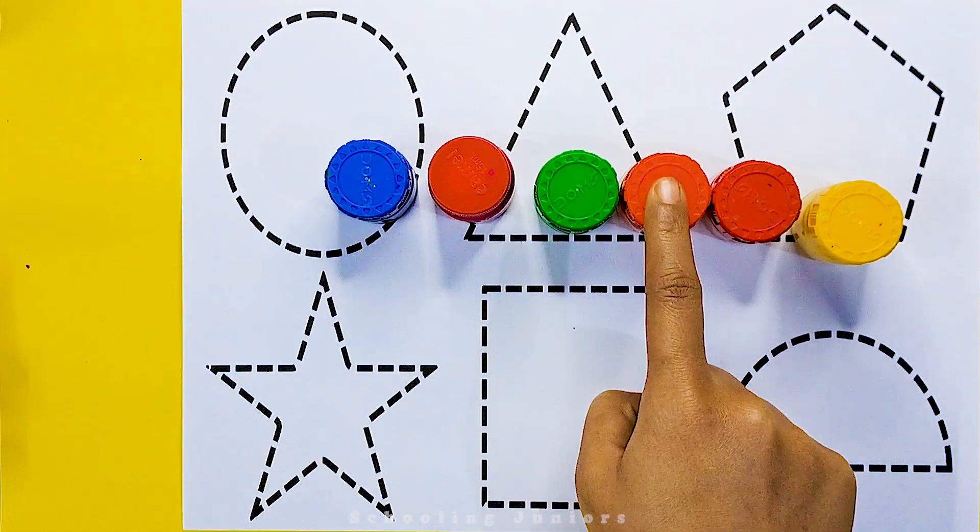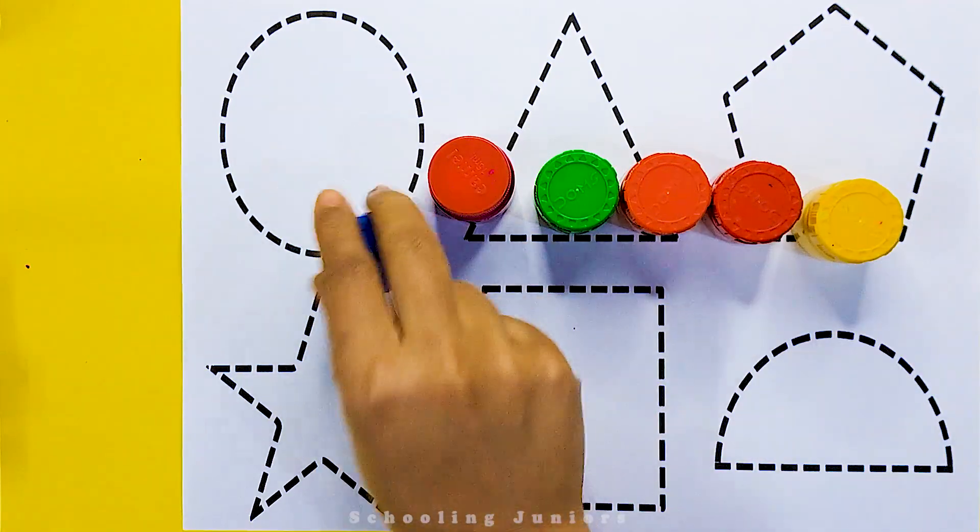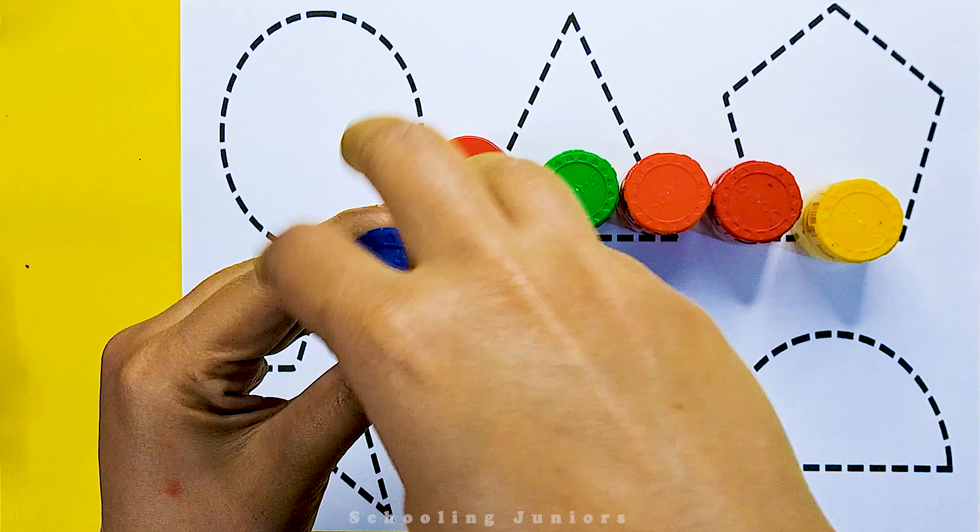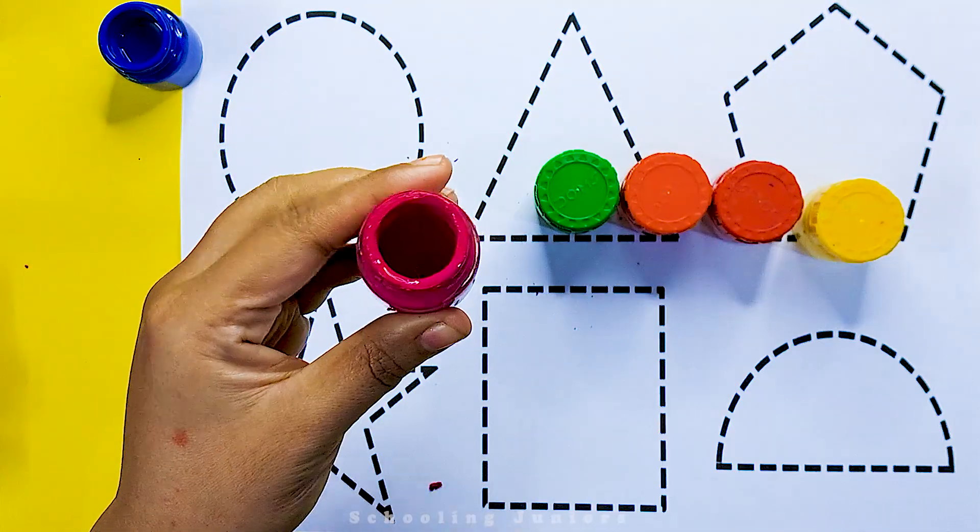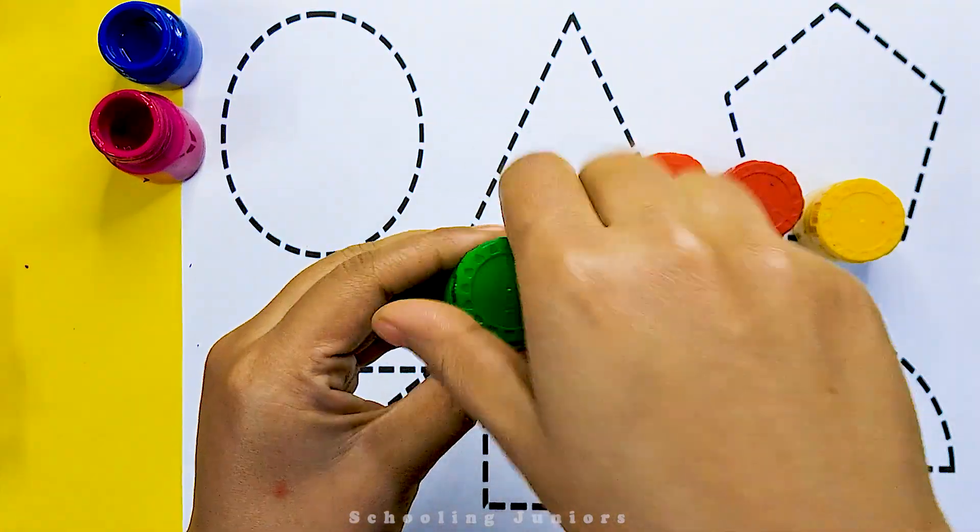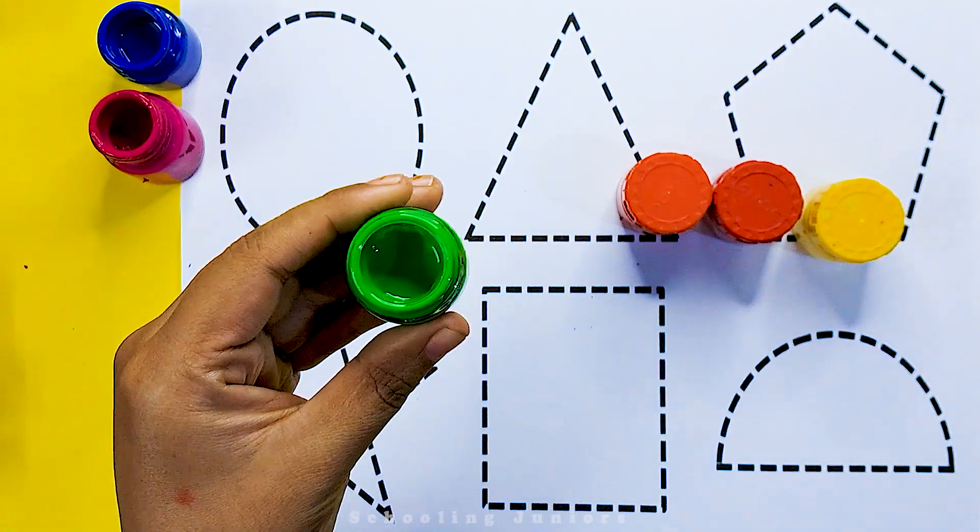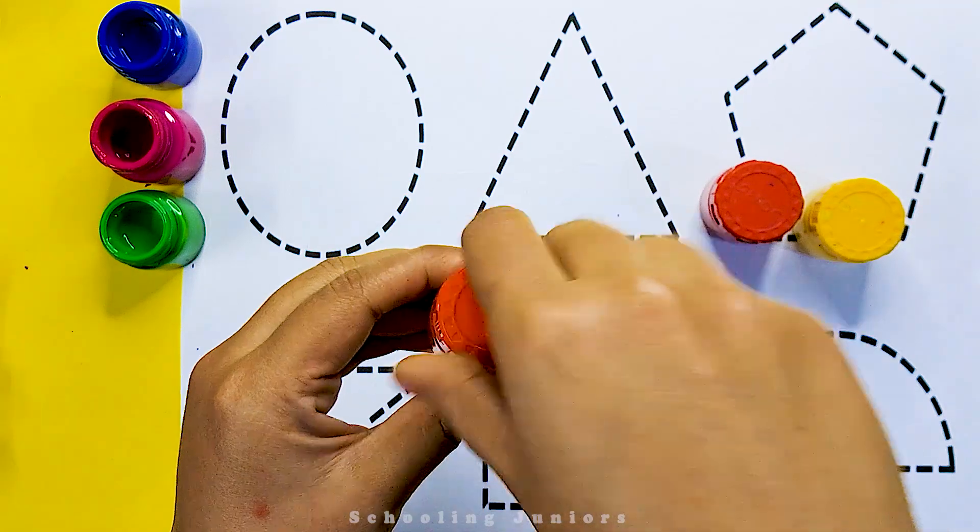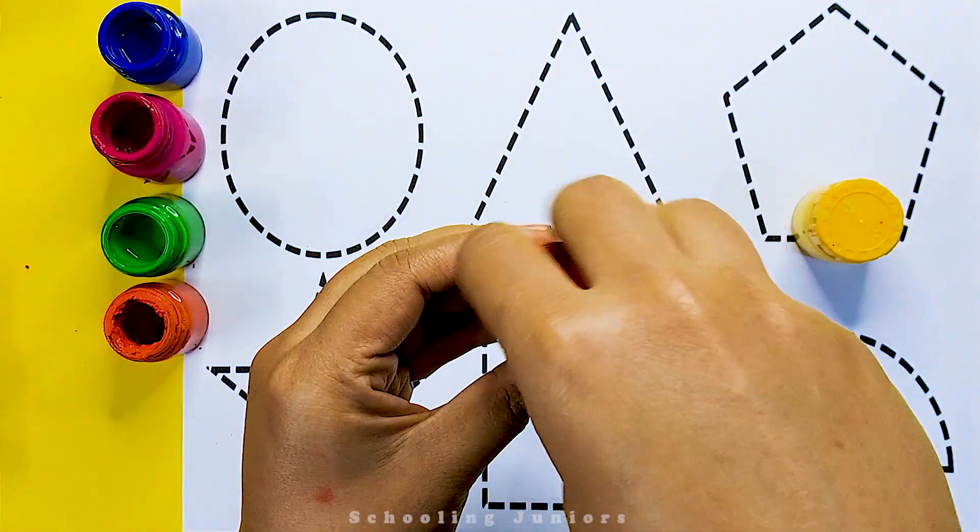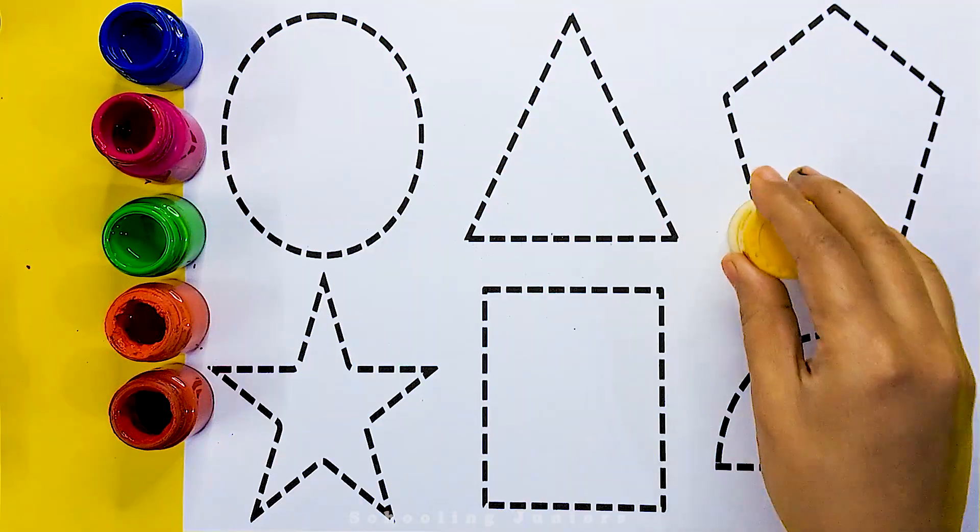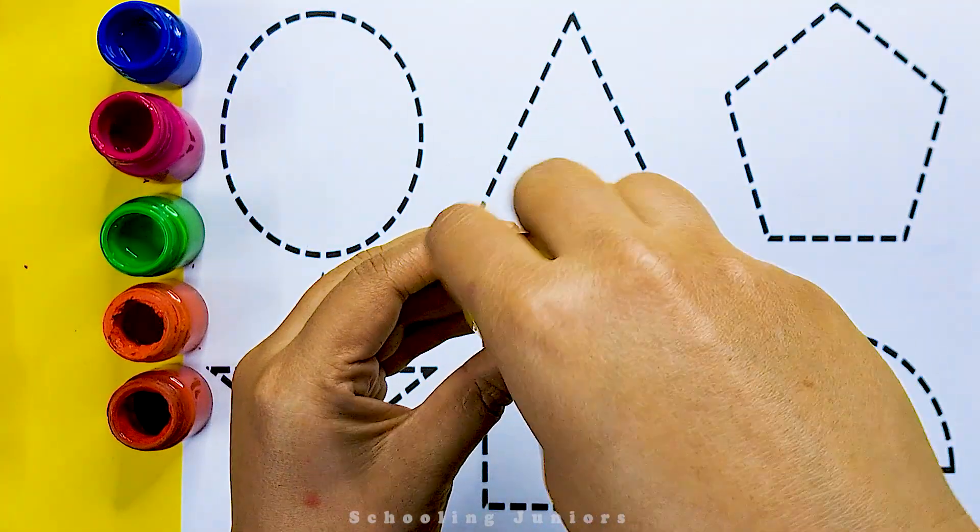These are our lovely colors. This is blue color. This is pink color. This is green color. This is orange color. This is red color. This is yellow color.